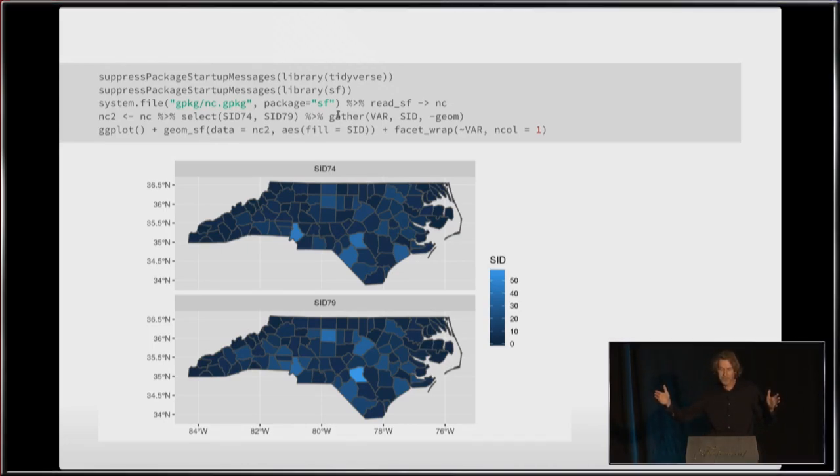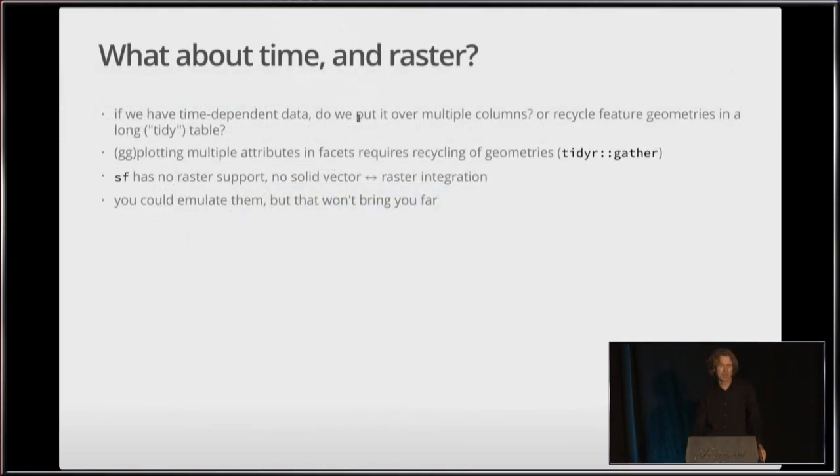But then what happens if you have like 50 instances of time, or when you have 500 or 5,000? You would have like 5,000 columns, and you are going to stack all of them, and so on. It's getting very messy. And also, keeping time in columns is not a good idea at all, because where do you put the timestamp? So you would have to put it in the column name. So time is an issue there. GG plotting is something of an issue. There is also a recurring question of the support for raster data and solid vector and raster integration. This is something you can emulate by having points on the raster or little square polygons, but it is not going to bring you far in the sense of scaling.